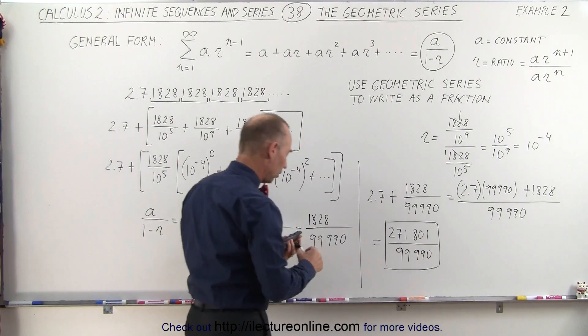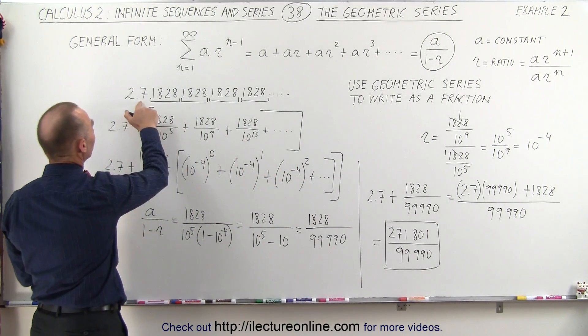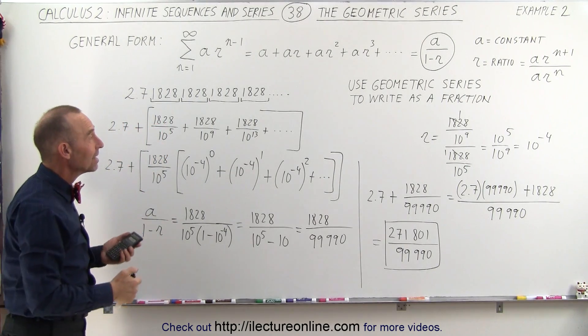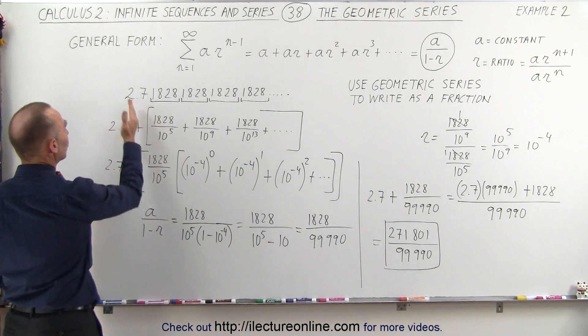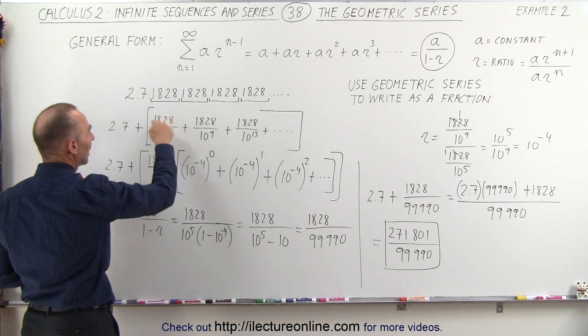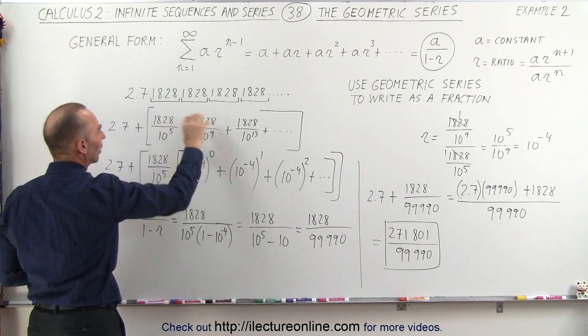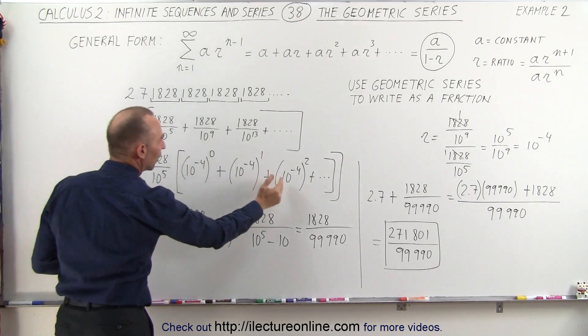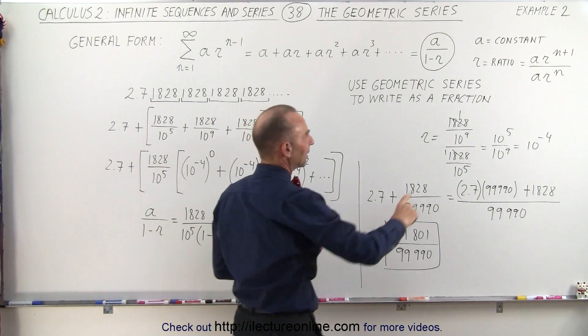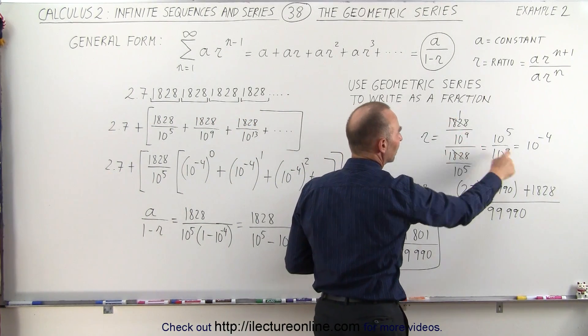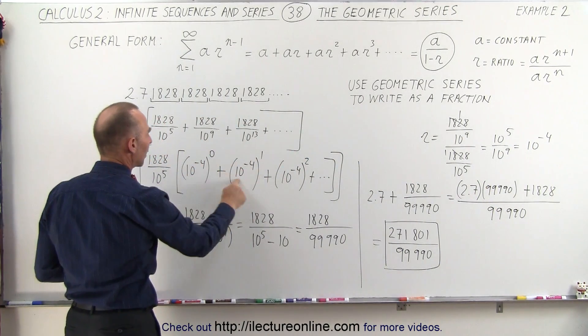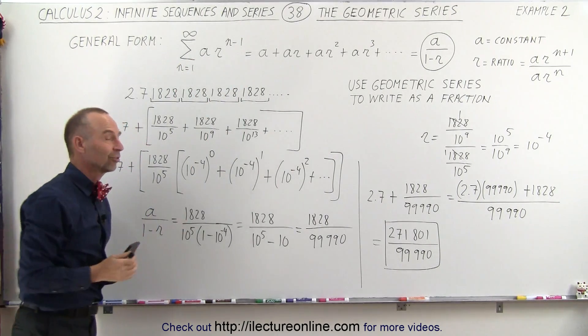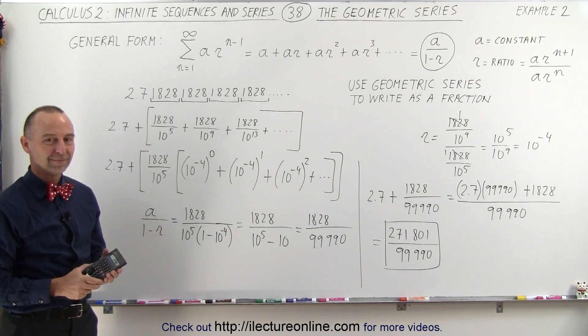This is the fraction form of the number 2.7 1828 1828 and so forth. So again we use the geometric series concept, we separated the 2.7 from the rest of the number, then we had to recognize what our constant was and we used the constant 1828 divided by 10 to the 5th, which then left us with our ratio. Our ratio was found by taking two consecutive terms, dividing one by the other, and we got 10 to the minus 4, so this became our common ratio multiplied down the constant A, and we had it in the form of a geometric series.